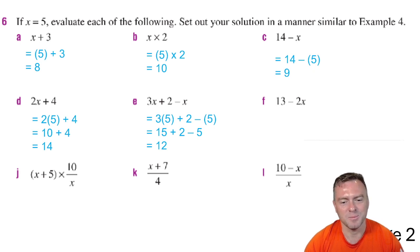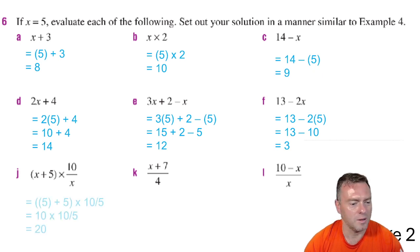So you get 15 plus 2 minus 5 which would equal 12. Next one would be 13 minus 10 which gives you 3. Then the next one would be 5 plus 5 times 10 divided by 5. So 10 times 2 which would give you 20. Next one would be 12 divided by 4 which would give you 3.